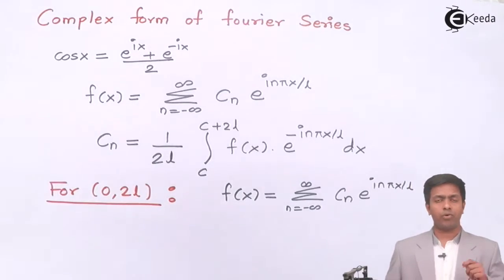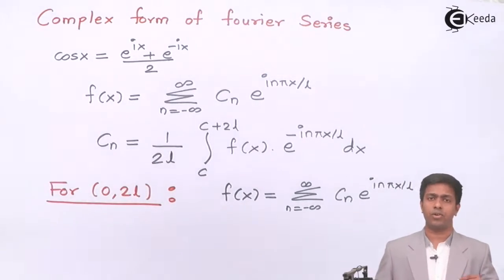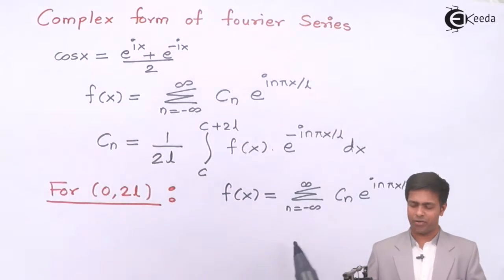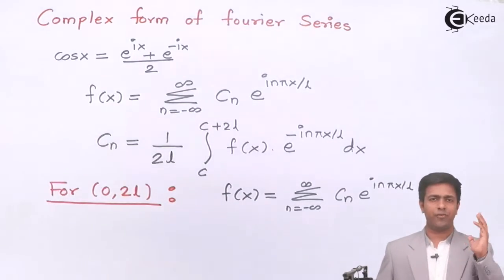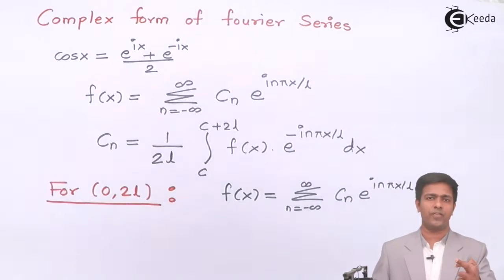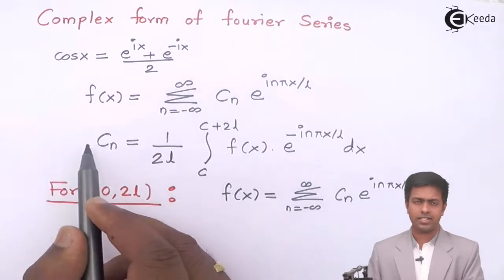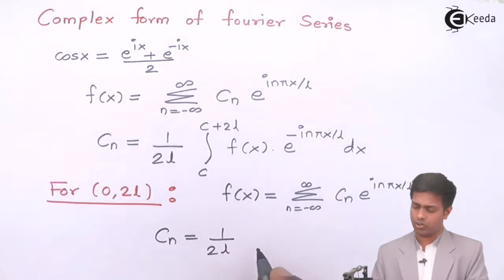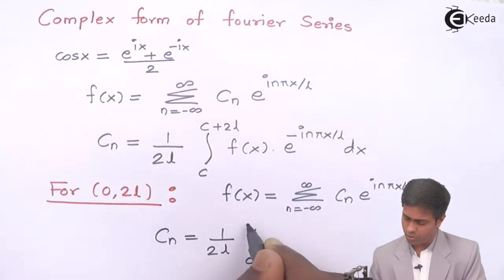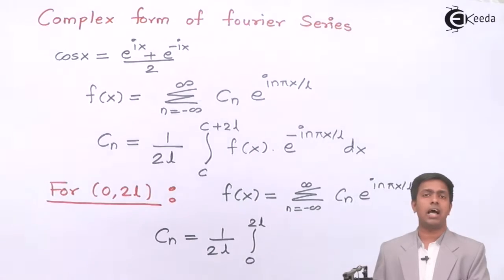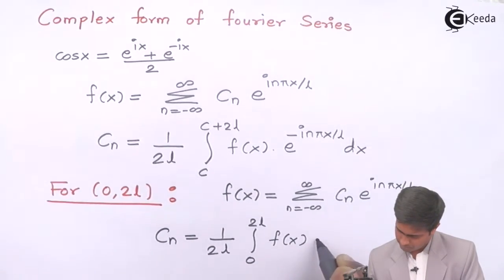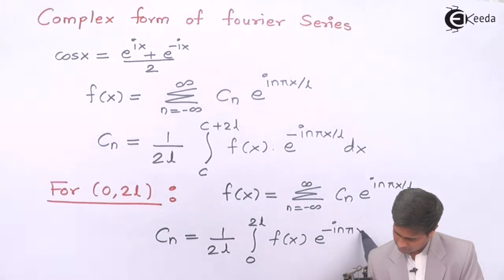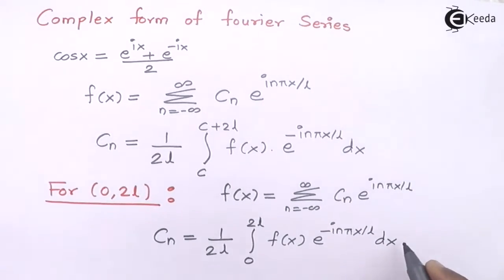Note that in the summation, n ranges from −∞ to +∞, whereas in the standard Fourier series n ranged from 1 to ∞ — that is one key difference. For the interval 0 to 2l, cₙ = (1/2l) × integral from 0 to 2l of f(x) · e^(−inπx/l) dx. This is the formula for the range 0 to 2l.